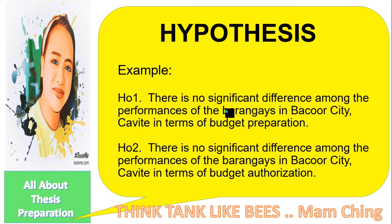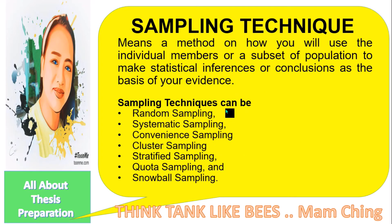Number three is sampling technique. It means a method on how you will use individual members or a subset of a population to make statistical inferences or conclusions as the basis of your evidence. The techniques available are: random sampling, systematic sampling, convenience sampling, cluster sampling, stratified sampling, quota sampling, and snowball sampling. These methods are used by statisticians in research papers.